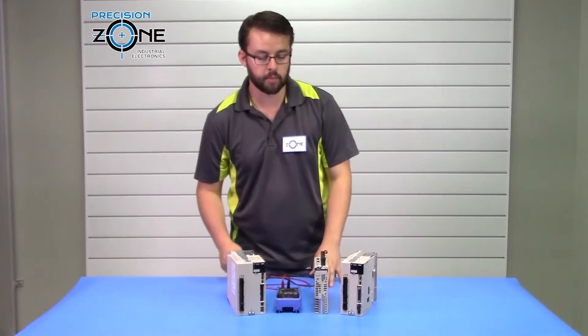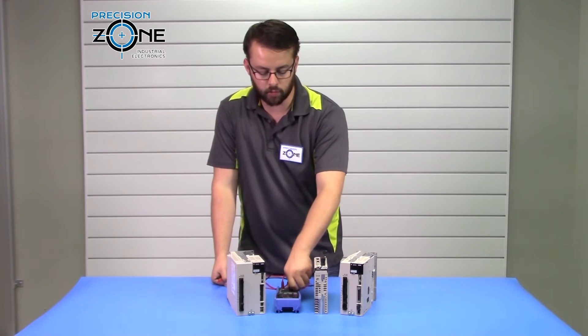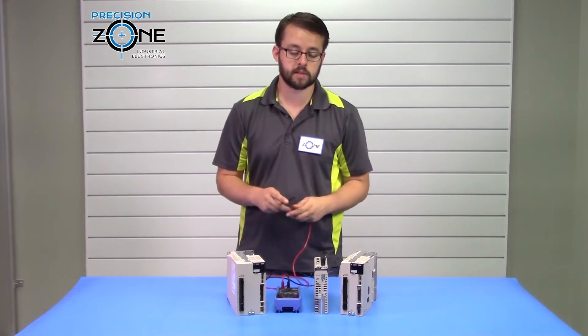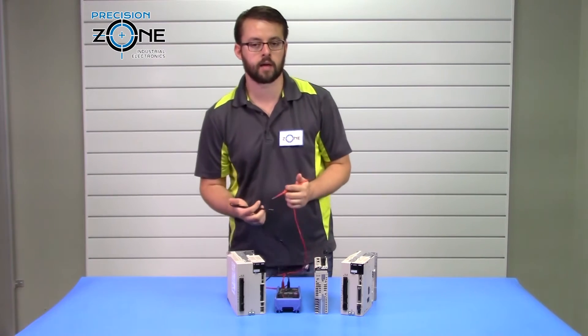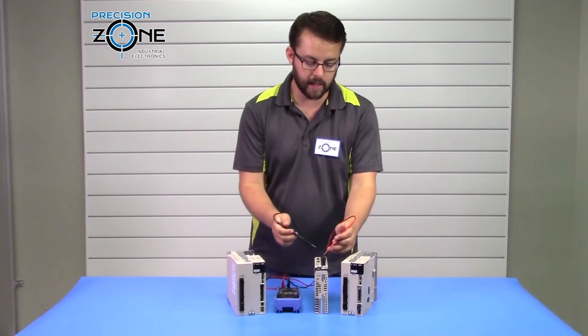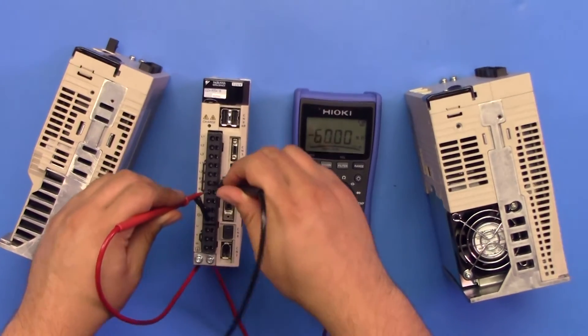So that verifies that your inputs have not blown up or have been shorted. Then you're going to want to switch your digital multimeter to the resistance check function, and you're going to want to check the resistance of your regen resistor to verify that it has not been burned out.